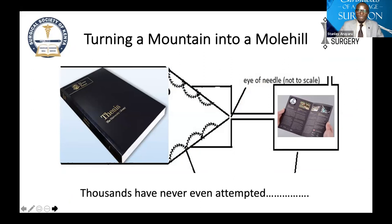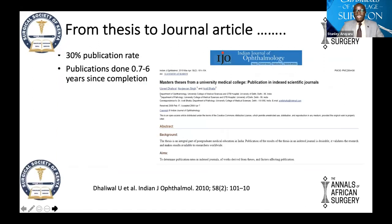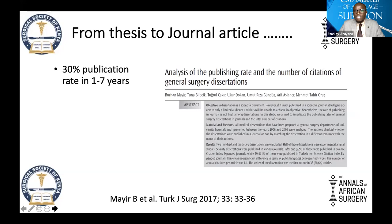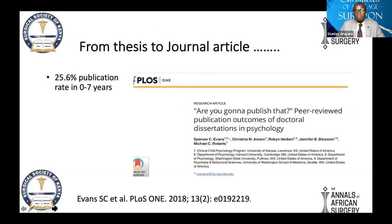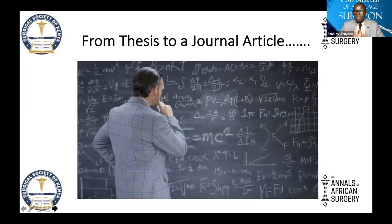Turning a thesis into a journal article is akin to turning a mountain into a molehill. Research shows that in ophthalmology, only about 30% publish over up to six years. General surgery has a similar rate and similar waiting time. Doctoral fellowship studies show just a quarter — 25% — will publish their doctoral theses. The question is: how do you convert what you've gathered over years into something that is convincing and acceptable to others? That formula is what we are looking for today.